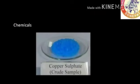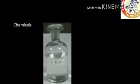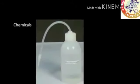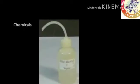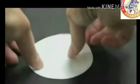For preparing crystals of copper sulfate, we need some chemicals. Those chemicals are copper sulfate, dilute sulfuric acid, water as a solvent, and ethyl alcohol that should be mixed with water. These are the basic chemicals that we need to prepare pure crystals of copper sulfate.